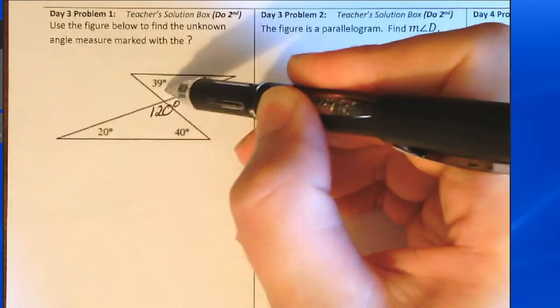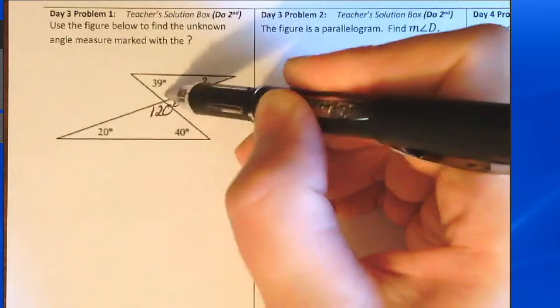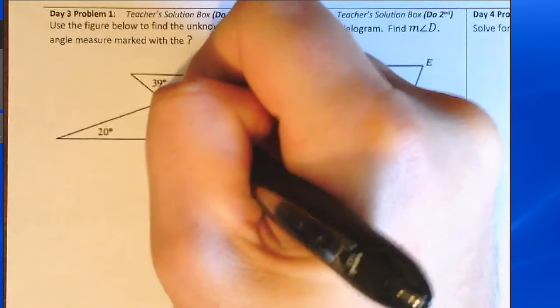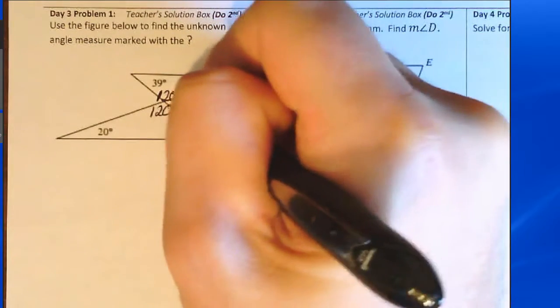This angle and this angle are vertical angles, and vertical angles are congruent, so then this angle here is 120 degrees.